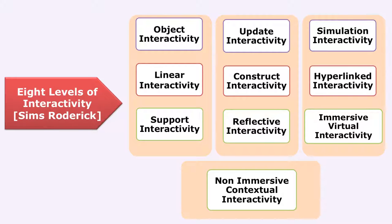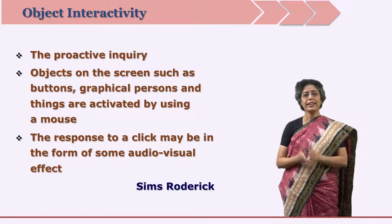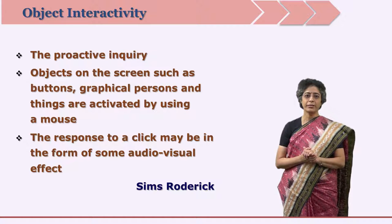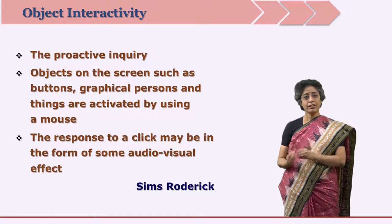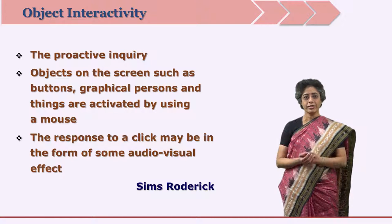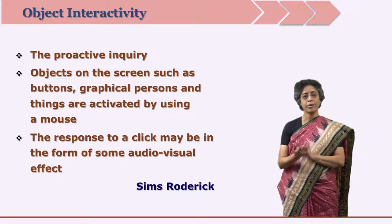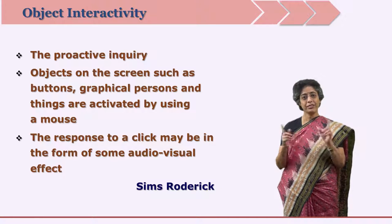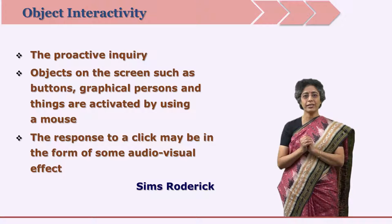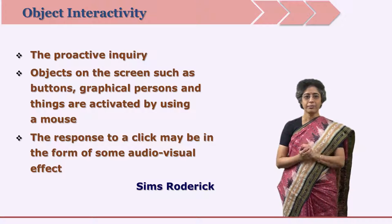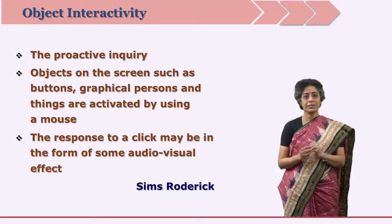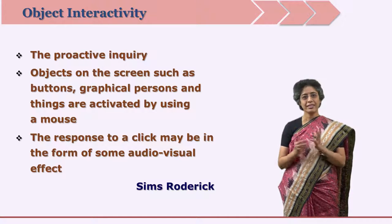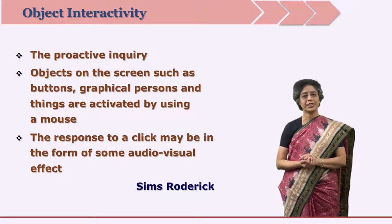Object interactivity is a kind of proactive inquiry in which the learner is provided with an environment containing many objects — such as buttons and graphic persons. The learner is expected to click on these objects to bring in some different form or piece of information, and multimedia elements get opened. For example, if you click on a person and the person starts speaking, that kind of interactivity is known as object interactivity.